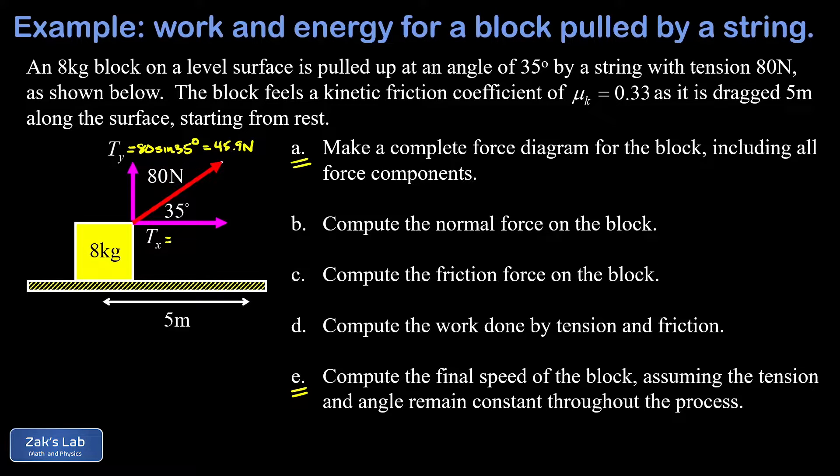Tx is going to be 80 cosine of 35 degrees and that gives us 65.5 newtons. Next we'll get the force of gravity into the diagram. That's given by mg. If we sub in the mass here of eight kilograms and a g of about 9.8 meters per second squared, we end up with a force of gravity of 78.4 newtons.